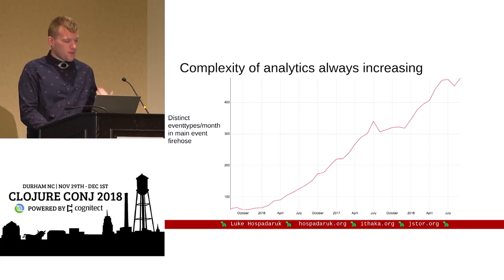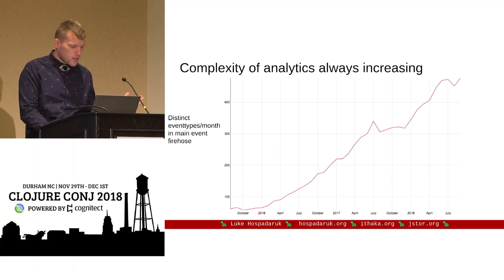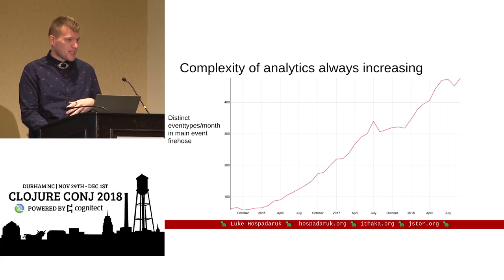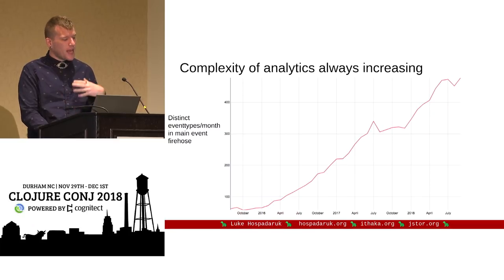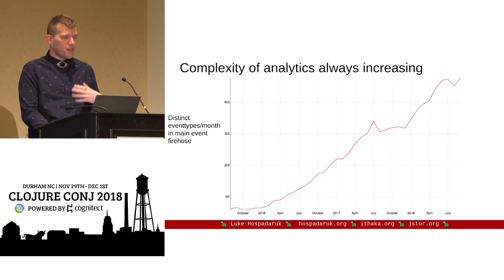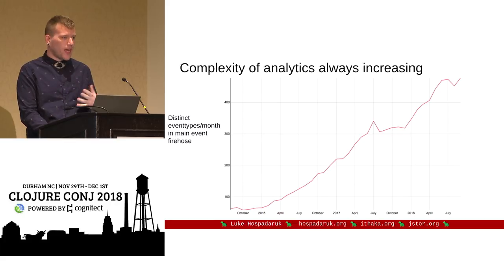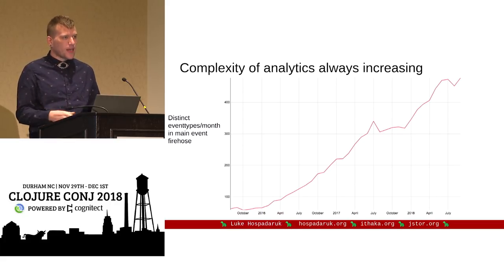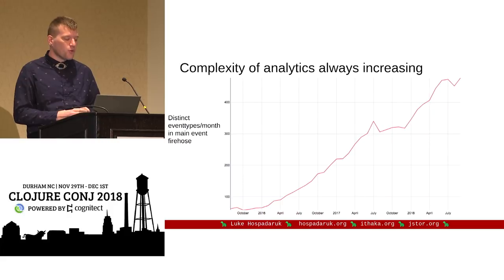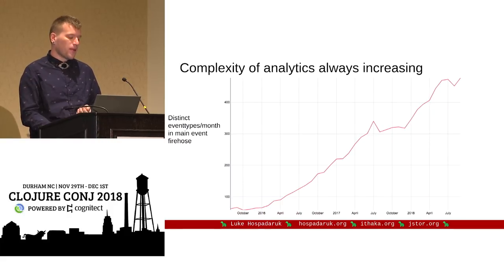This graph shows the number of distinct event types per month since late 2016, and it's just to demonstrate that the complexity of the data we need to handle is constantly growing. We can't have a predefined static set of events — people are constantly adding new events to this pipeline.